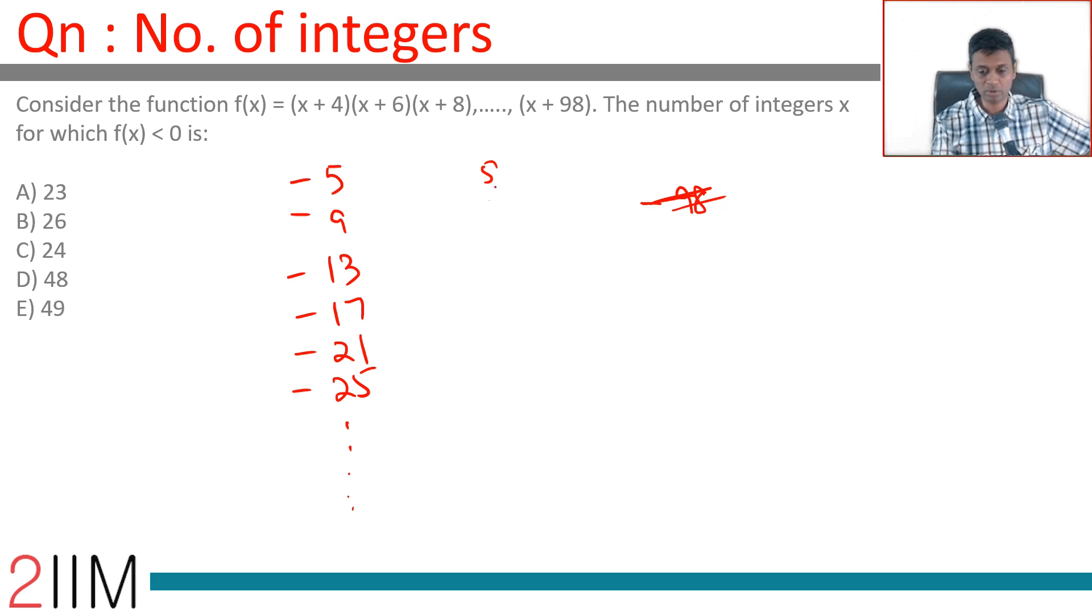I am going to forget about the minus. I am going to think about numbers 5, 9, 13, 17, 21, 25 and see what is the last value we can take.